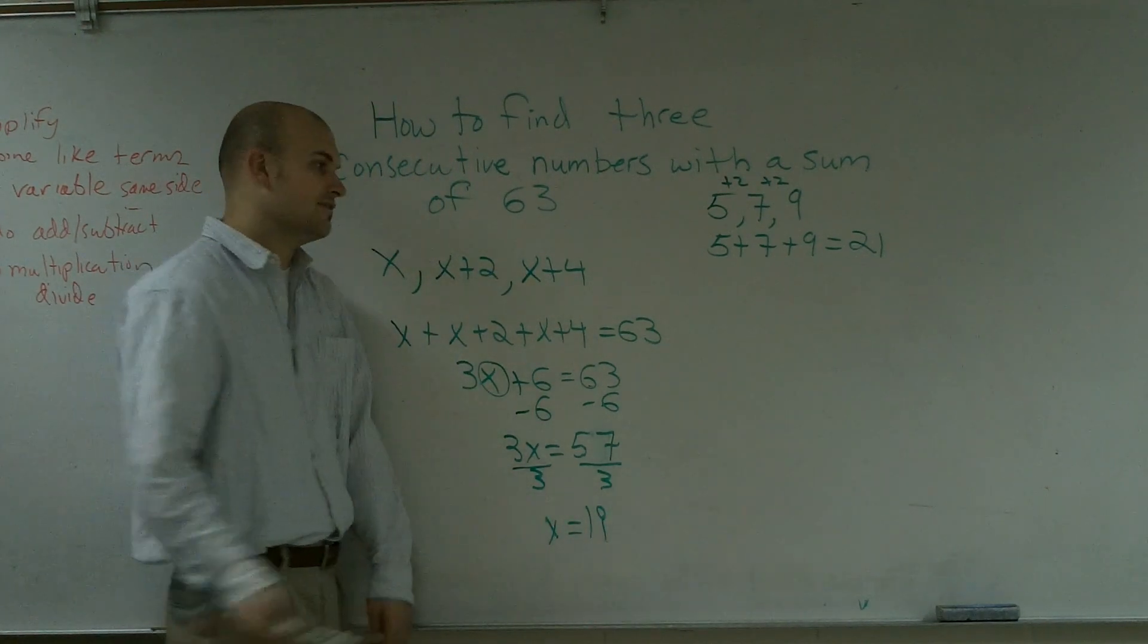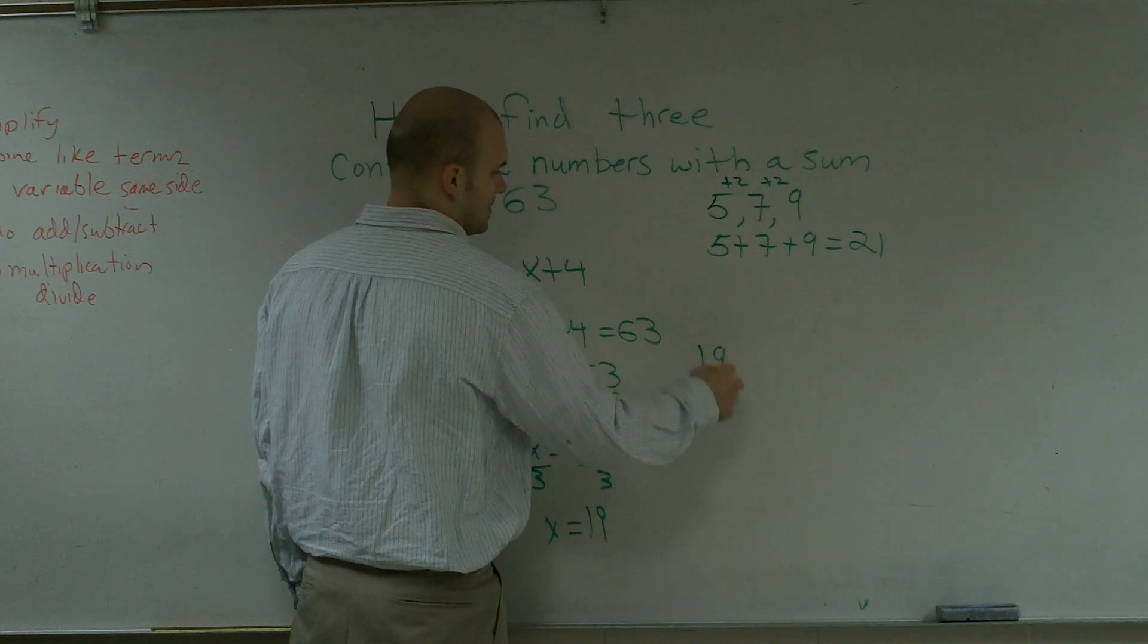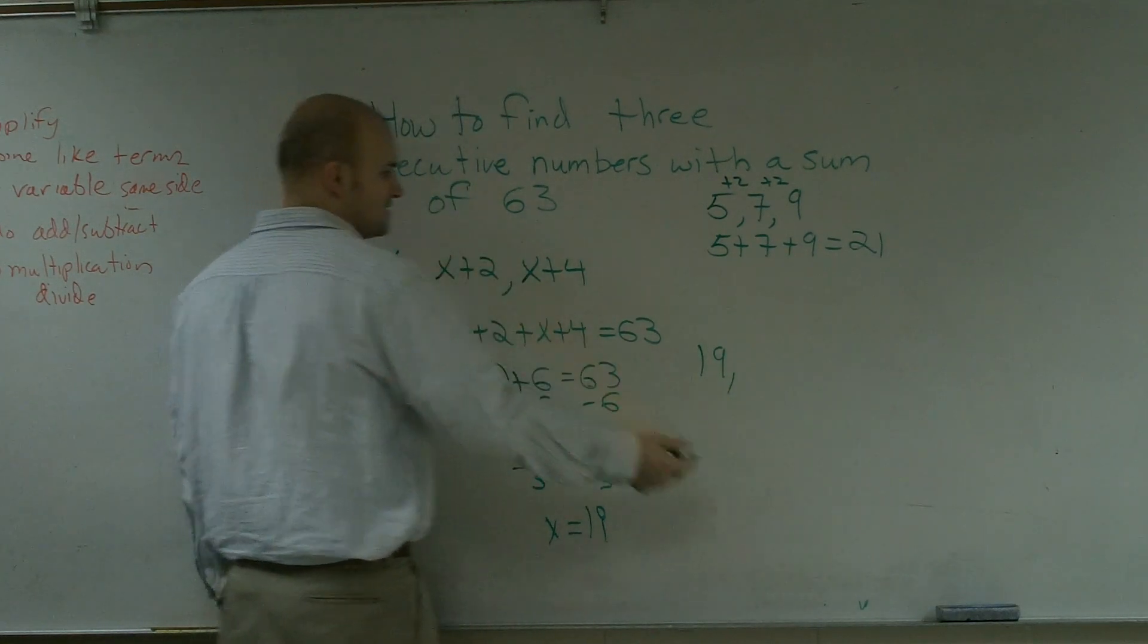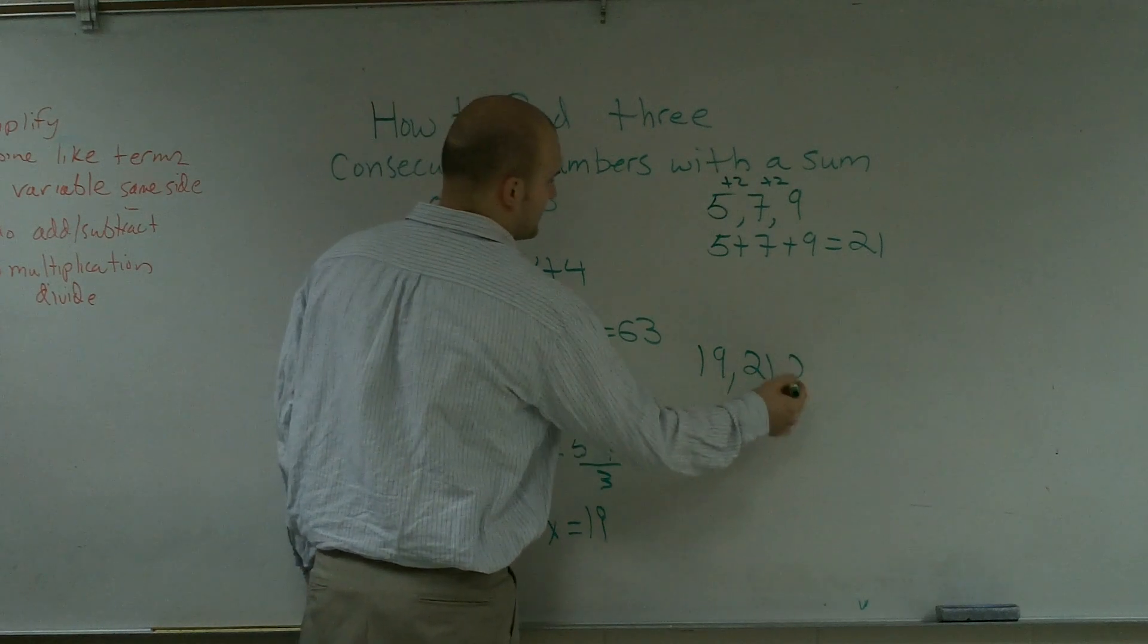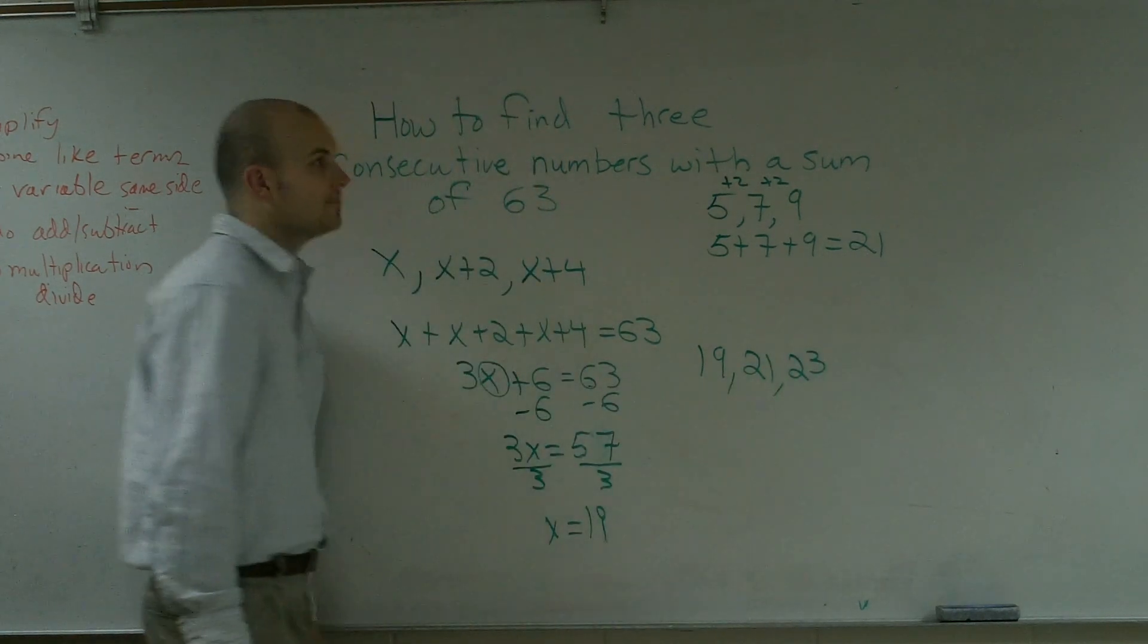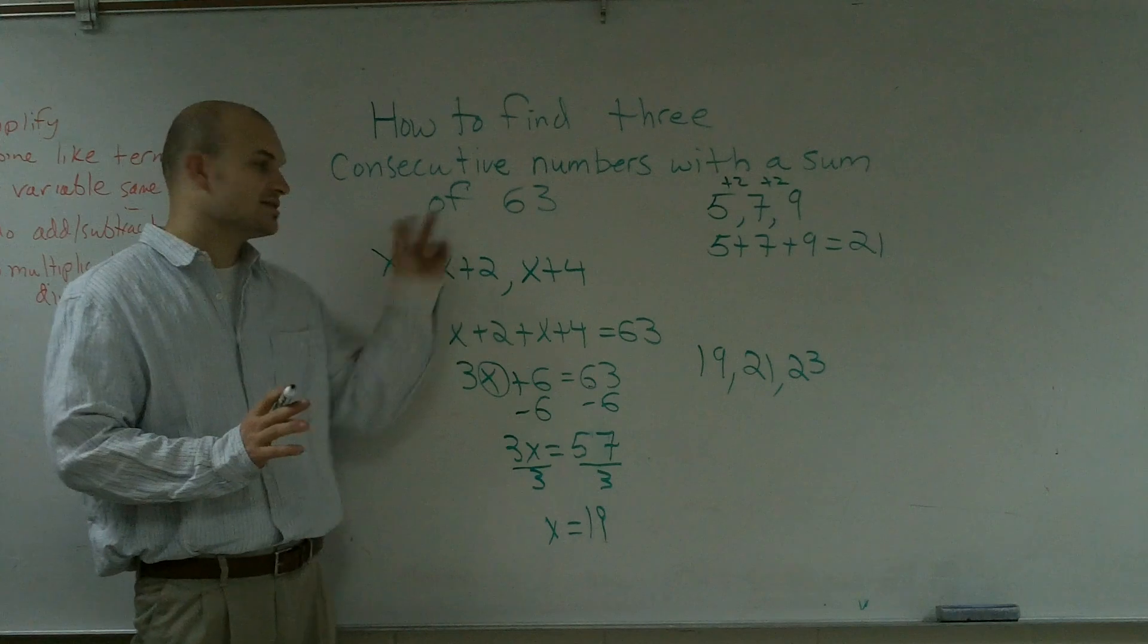So my three consecutive numbers is 19. The next one will be 19 plus 2, which is 21. And then 19 plus 4 is 23. So that's how you find three consecutive numbers with a sum of 63.